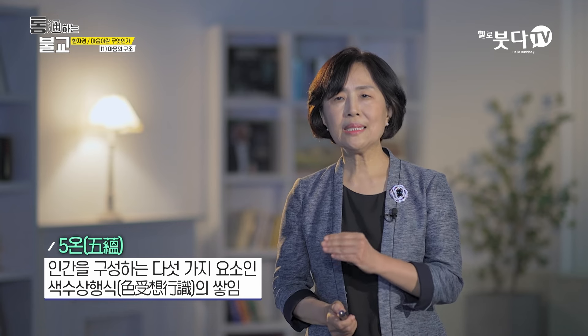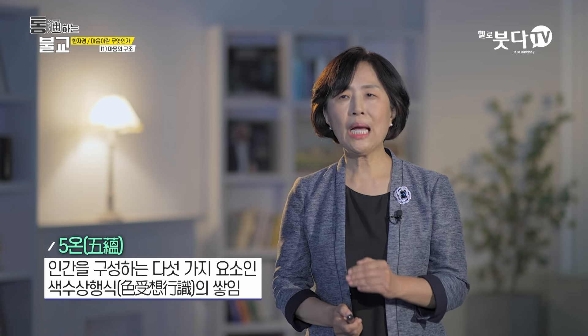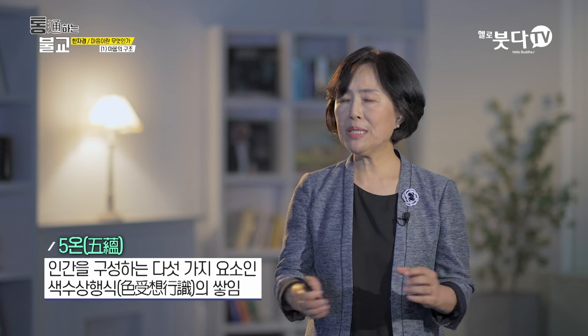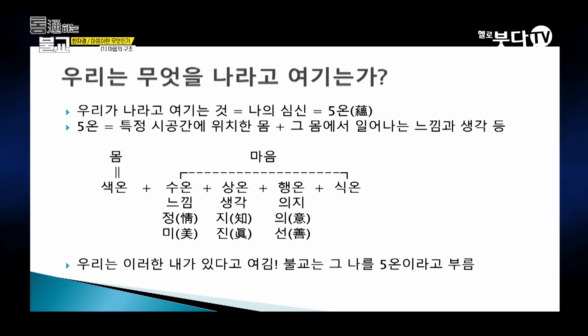오온은 색온, 수온, 상온, 행온, 식온으로 구성됩니다. 마음을 총괄적으로 식온이라고도 말할 수 있고, 그 마음 안에 수온, 상온, 행온을 이야기하는데, 이 수상행은 마음의 전체 활동을 대변합니다. 느낌과 생각과 의지인 것이죠.